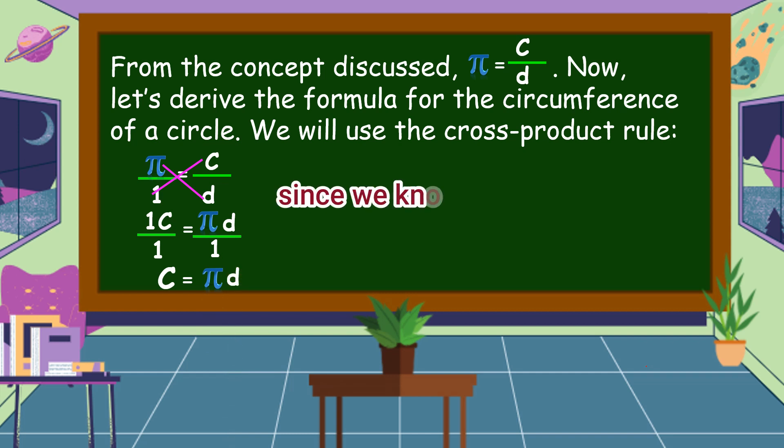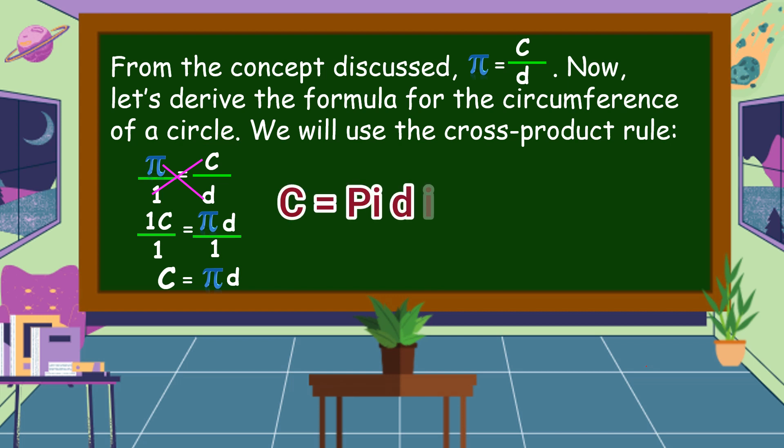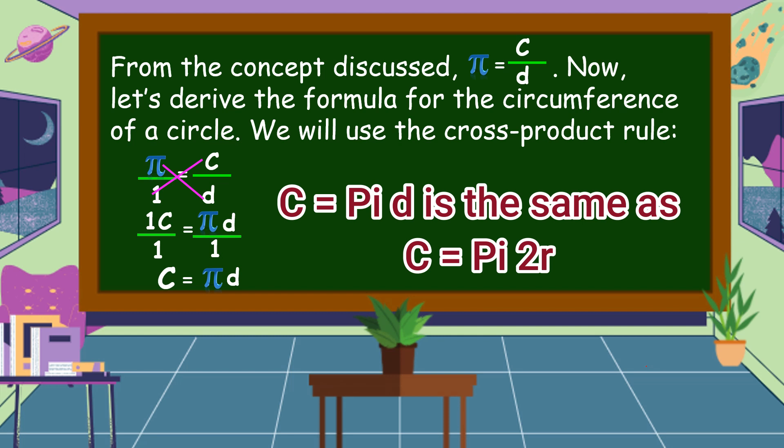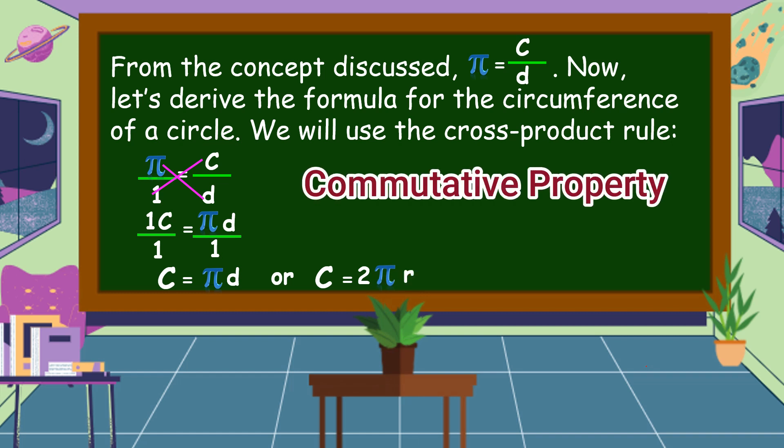Since we know that the measure of the diameter is twice the radius, d is equal to 2r. C is equal to pi d is the same as c is equal to pi 2r or c is equal to 2 pi r. It is because of commutative property of multiplication.